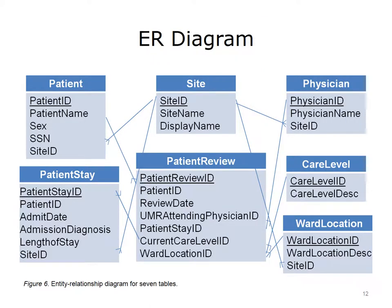Since the patient review table contains several foreign keys, it has many relationships with other tables. This ER diagram displays the other tables that have relationships with the patient review table, namely the patient, patient stay, physician, care level, and ward location tables. The site table does not have a relationship with the patient review table. However, it does have relationships with other tables: patient, patient stay, physician, and ward location. This is representative of only a portion of the full ER diagram and tables within the NUMI application. Not all elements of the tables are shown, nor are all the tables shown. Nevertheless, it is still apparent from the diagram how the tables are related to one another.